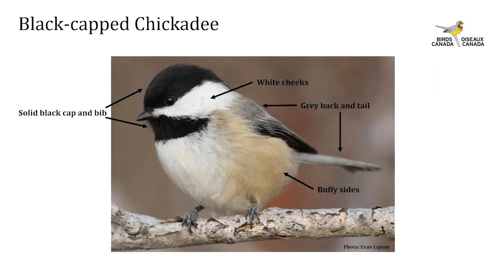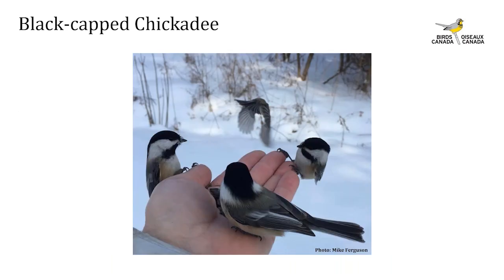One of our more recognizable birds is the black-capped chickadee — a small, compact bird. Males and females are monomorphic. They have a black cap and bib, white cheeks, a gray back with a long gray tail, buffy-colored sides, and a white belly. They are quite willing to feed from your hands and are very curious and brave for being such a tiny bird.